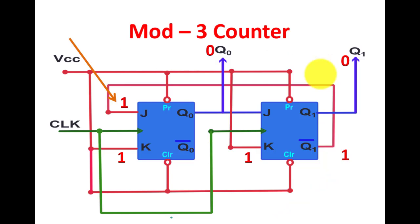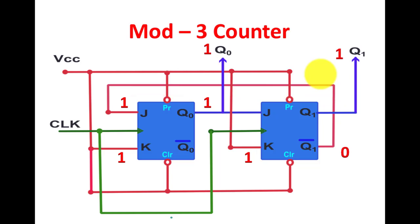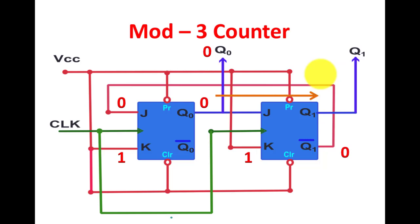When the first clock edge appears, the previous output of the first flip-flop was zero. With J=1 and K=1 it toggles, so Q0 becomes 1. In the next state, this input to the second flip-flop changes its output. Then this zero is fed back to the first flip-flop, making J=0 at the next clock, resulting in state 01 transitioning to 10.